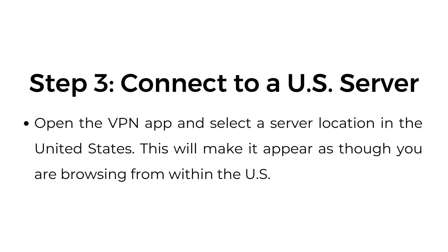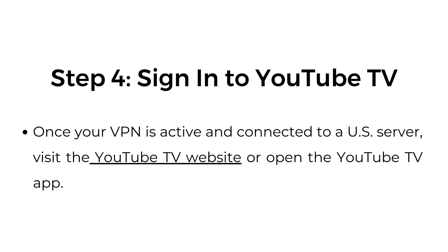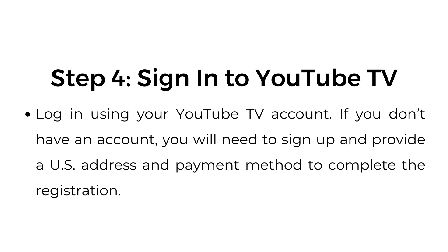Step three: connect to a US server. Open the VPN app and select a server location in the United States. This will make it appear as though you're browsing from within the US. Step four: sign into YouTube TV. Once your VPN is active and connected to a US server, visit the YouTube TV website or open the YouTube TV app and log in using your YouTube TV account.